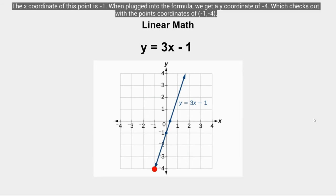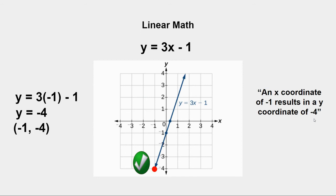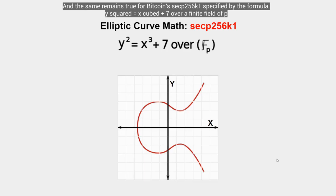An x coordinate of 0 results in a y coordinate of −1 along the line specified by y = 3x − 1. For our third point, the x coordinate is −1. Plugging that into the formula: 3(−1) − 1 = −4, so y = −4. This checks out because the point's coordinates are (−1, −4). As you can see, the line drawn is a direct result of the specific formula used — a different formula would give a different line with a different slope.